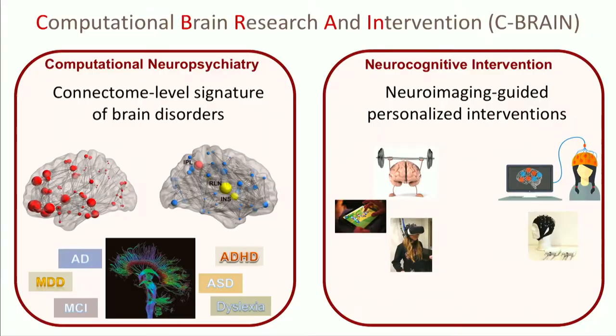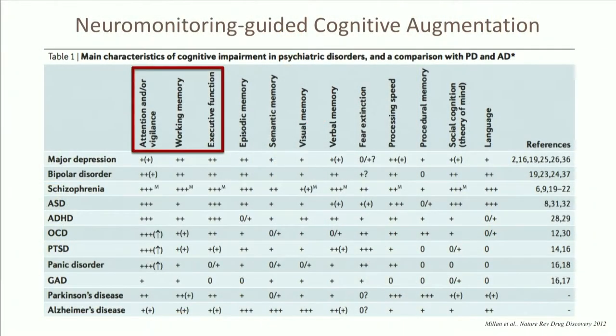The interventions we've been using involve different technologies — computerized interventions, virtual reality, and so on — with the help of real-time imaging. I'm focusing mainly on cognitive abilities because they are cross-diagnostic. Executive functions, working memory, and attention are all affected irrespective of what mental disorder a person has, so we're taking a very cross-diagnostic approach.